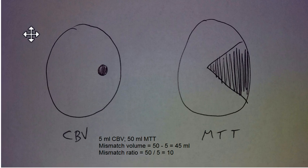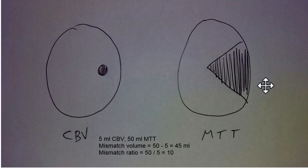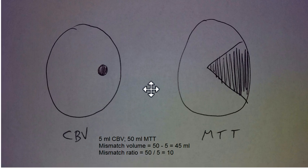Here's a figure to illustrate the concept. Say there is a small CBV defect but a moderate-sized MTT defect — we would say there is a pretty large amount of mismatch. There is a small core infarct with a significant amount of surrounding potentially reversible ischemia. To quantitate: if the CBV defect is 5 mL and the MTT defect is 50 mL, the mismatch volume would be 45 mL (50 minus 5), or a mismatch ratio of 10 (50 divided by 5). See the next video for the rest of this.